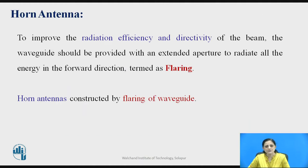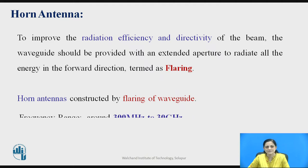Let us introduce the horn antenna. To improve the radiation efficiency and the directivity of the beam, the waveguide should be provided with an extended aperture to radiate all the energy in the forward direction, which is termed as flaring of the antenna. Flaring is provided to get more directivity and thus you can get the proper signal at the receiver side. Horn antennas are mainly constructed by flaring of the waveguide. The frequency range used for horn antenna is around 300 MHz to 30 GHz.